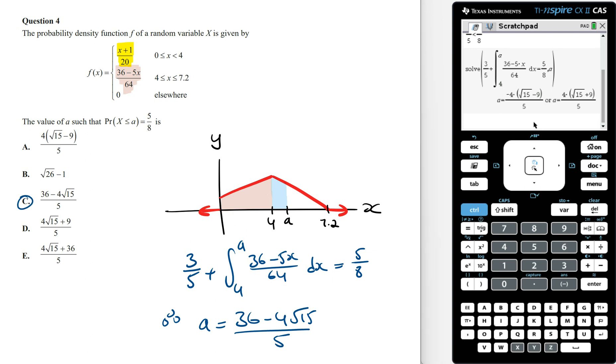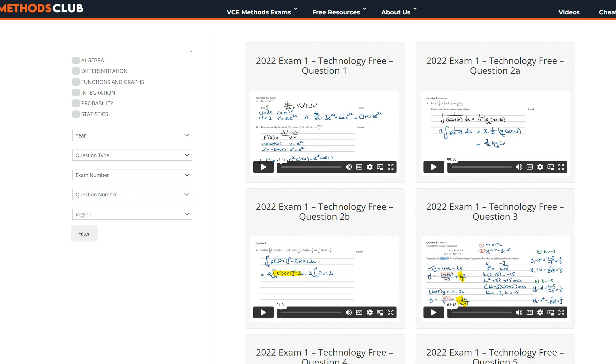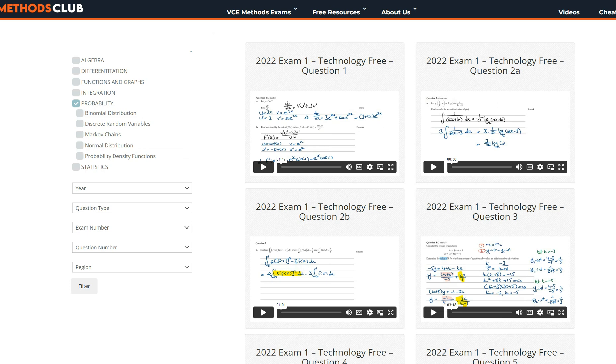Now if you guys want to learn and practice exam style questions similar to this one then join the maths methods club where you can group past maths methods exam questions by topic. For probability density function questions click on probability from the main topics and then from the subtopic select probability density functions. Go to question type, select multiple choice, and then click on filter.